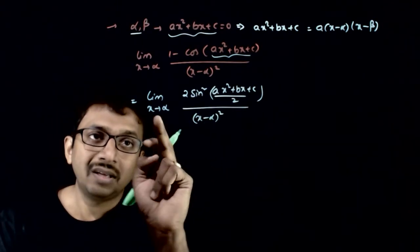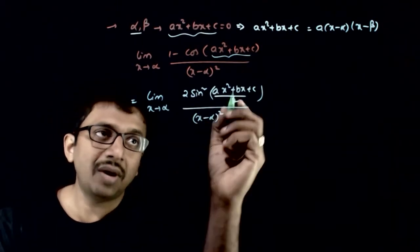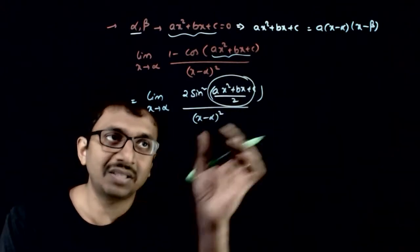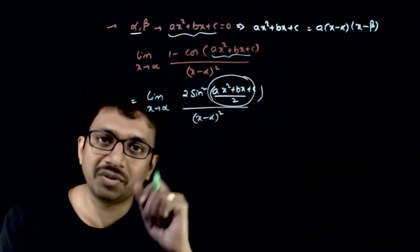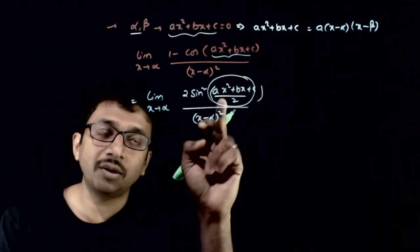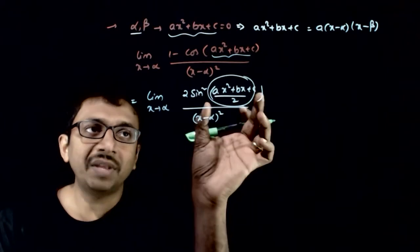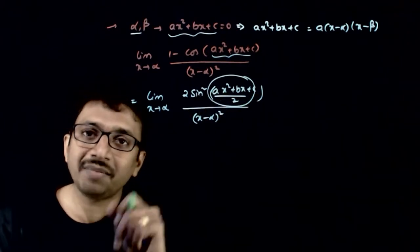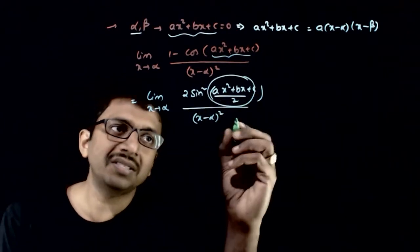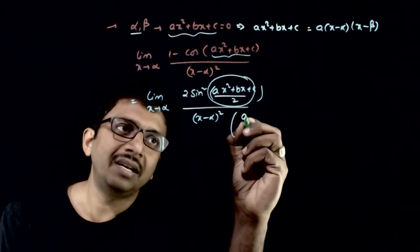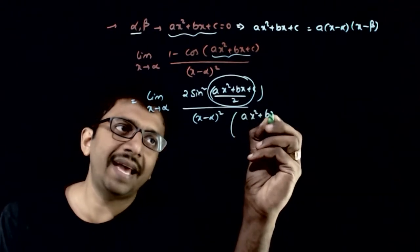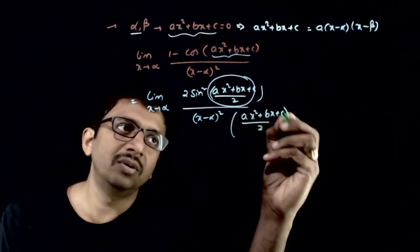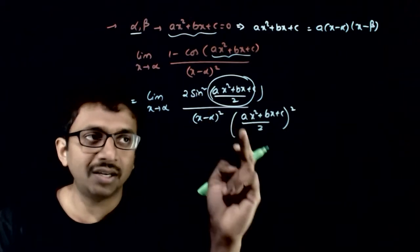Now, as x tends to alpha, this whole term goes to 0 because alpha is a root of the equation. So something tends to 0, and sin(something) divided by that same thing equals 1. So what I do is divide by (ax² + bx + c) / 2, whole square, because there are two sine terms.